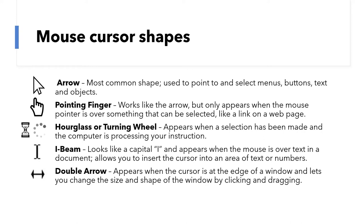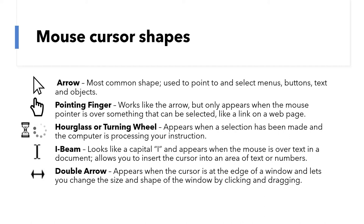When you move your cursor over something that you can select, it will turn into a pointing finger. That means the thing you have your mouse over is maybe a link to a web page — it's something that you can interact with. After you click an option, sometimes you'll see an hourglass or a turning wheel. What that means is that you have selected something and the computer is thinking about what you've told it to do and processing that. So if the hourglass is showing up or the wheel is turning, just be patient — give the computer a second, let it finish what it's doing, and then it will take you on to the next thing.